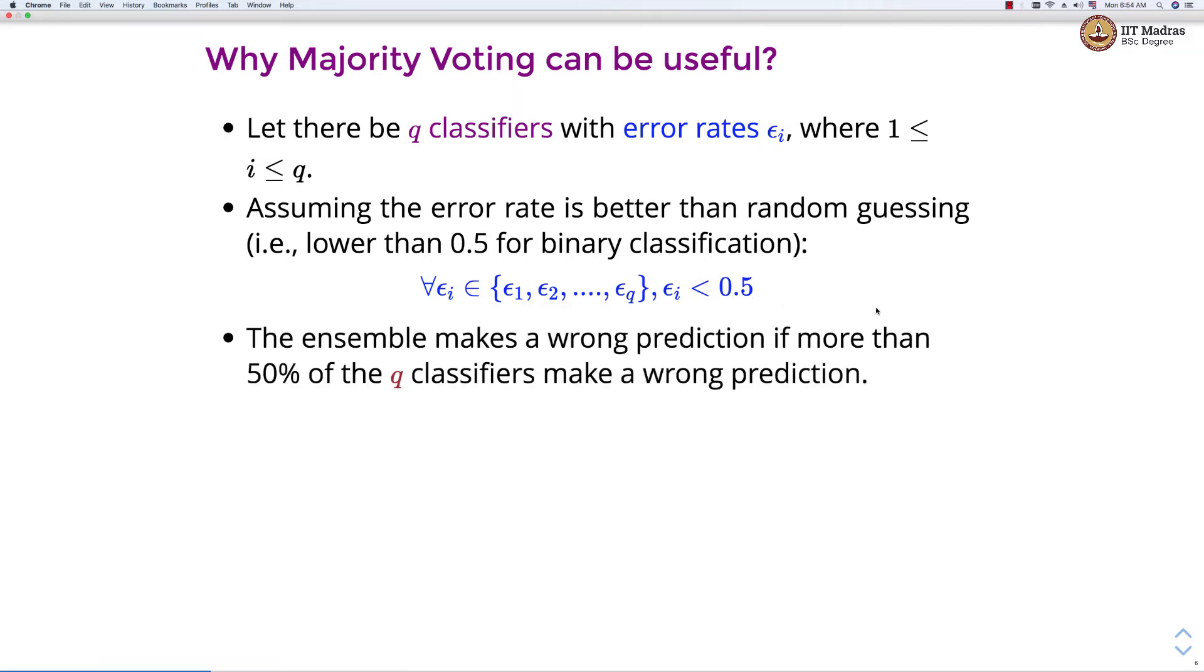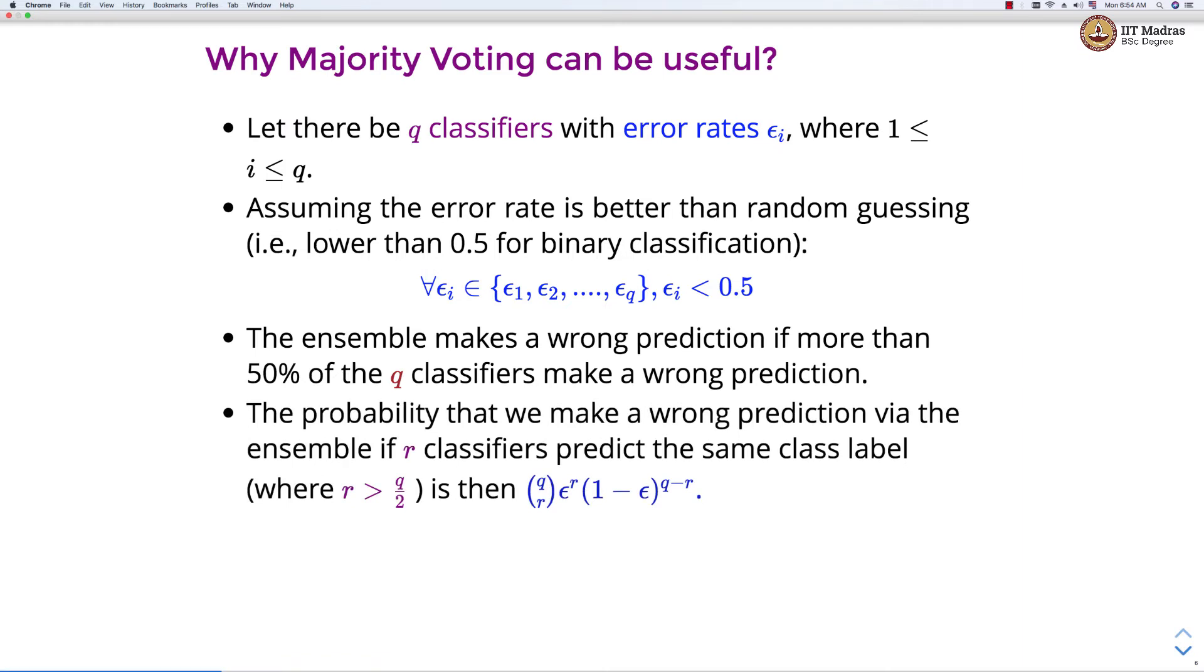The ensemble makes a wrong prediction if more than 50% of q classifiers make a wrong prediction. And the probability of a wrong prediction via ensemble, if r classifiers predict the same class label, is calculated via binomial distribution, which is given by q choose r, epsilon raised to r, into 1 minus epsilon raised to q minus r.